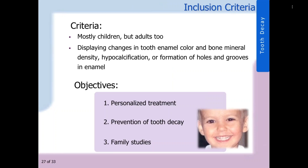Who is this test for? Children are highly recommended, but adults displaying changes in tooth enamel color and bone mineral density, hypocalcification, or formation of holes and grooves in enamel are also recommended. Why should one perform the test? The objective is to treat the patient based on personalized therapy based on the genetic results, and also to prevent tooth decay in a young child, adult, or family member who is unaware if they contain the genetic risk.